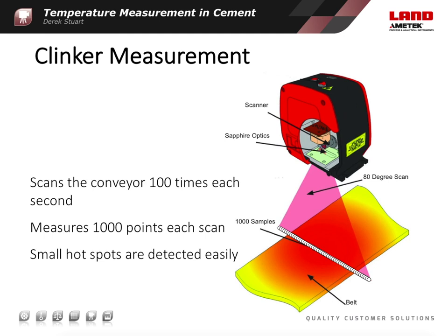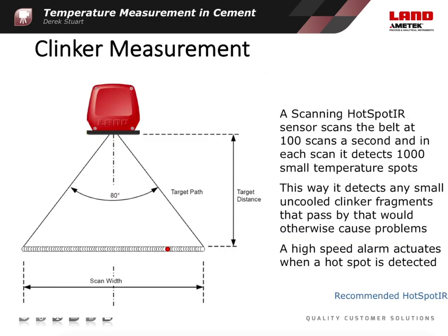There's only one moving part in the line scanner, the scanning mirror itself, and this has been designed to give many years of reliable service. The internal components are protected by a robust sapphire window, which is resistant to damage either from impact or from scratching. The Ametek Land line scanner has an 80 degree field of view. If it's mounted above a four foot wide conveyor, 1.3 metres, it needs to be set back around 2.5 feet or 75 centimetres to allow it to image the full width of the conveyor. It has a thousand discrete measurement points across the image, so the spatial resolution is of the order of 1.3 millimetres, less than a tenth of an inch.